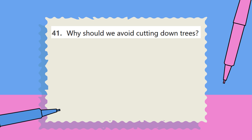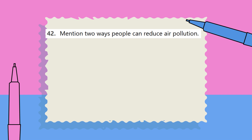Question 41: Why should we avoid cutting down trees? Question 42: Mention two ways people can reduce air pollution.